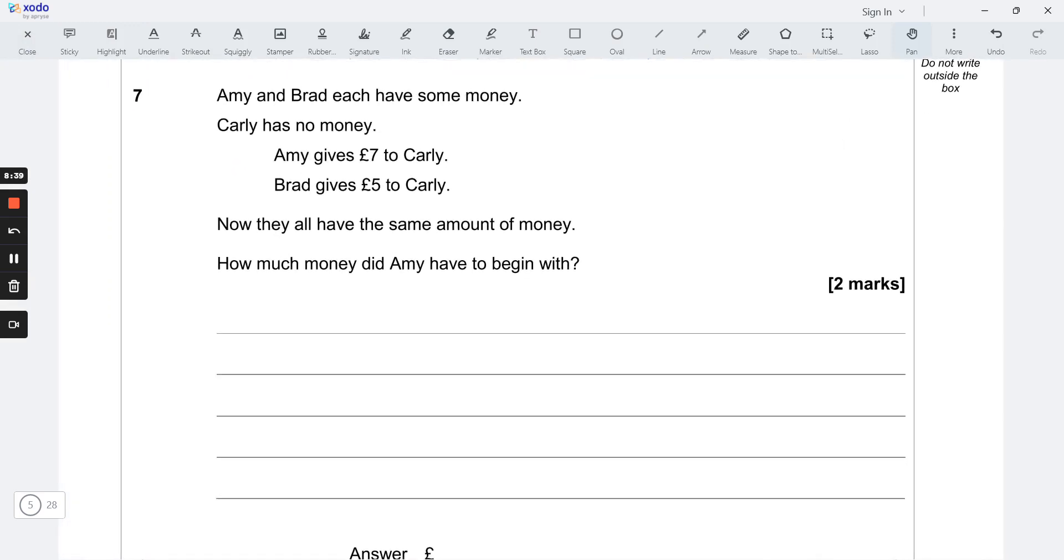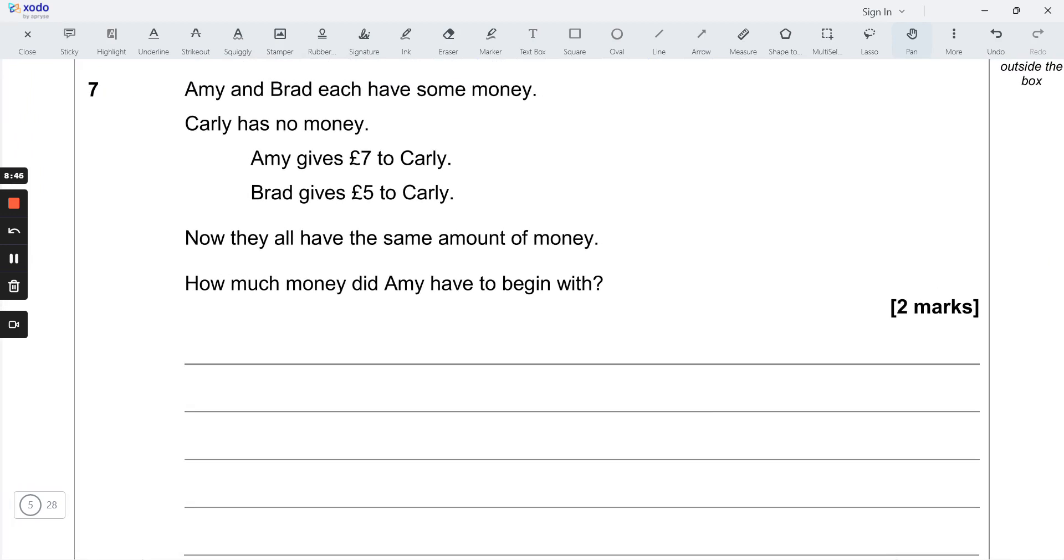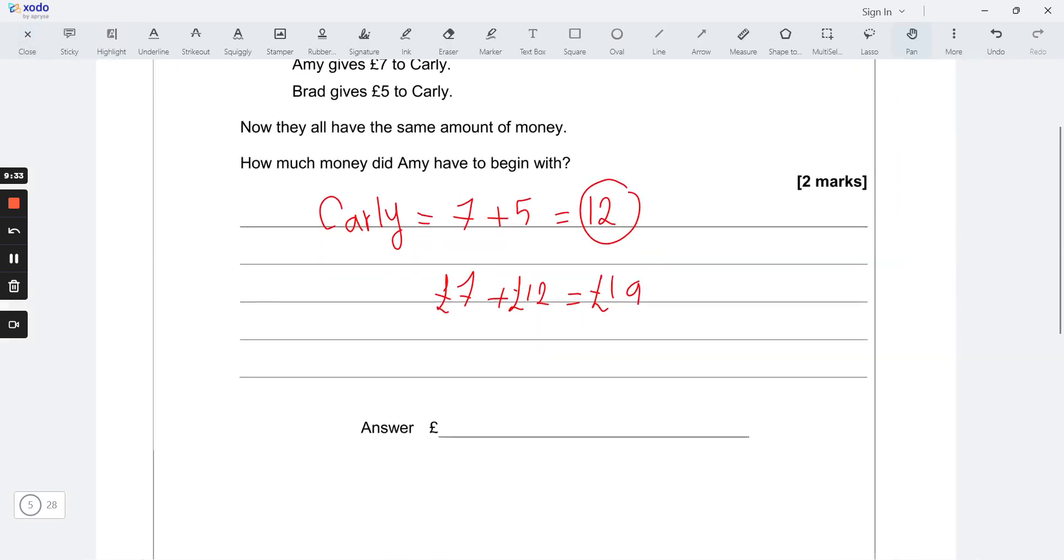Amy and Brad each have some money. Carly has no money, so Carly has zero money. Amy gives £7 to Carly, Brad gives £5 to Carly. Now they all have the same amount of money. That means Carly now has £7 + £5, so he has £12 now. How much money did Amy have to begin with? She should begin with £7 because she gave £7, and now they all have £12. So £7 + £12 = £19.